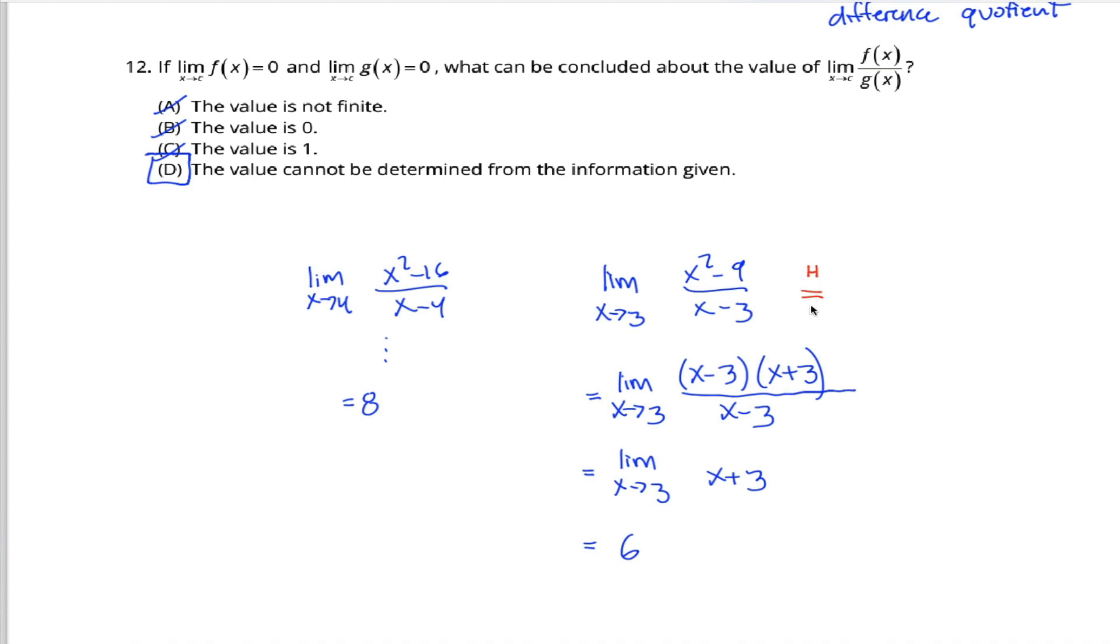Often to indicate that you're using L'Hopital's Rule, you put an equal sign with a little h up on top. And what L'Hopital's Rule tells you is that when you have an indeterminate form like we have here, that is, the limit of the numerator approaches 0 and the limit of the denominator approaches 0, or infinity over infinity,